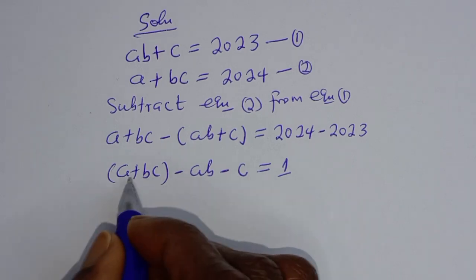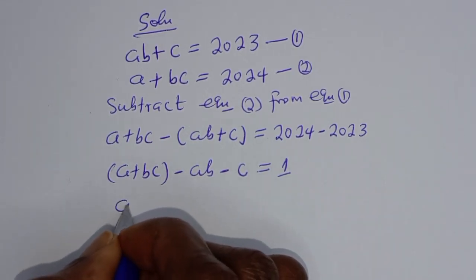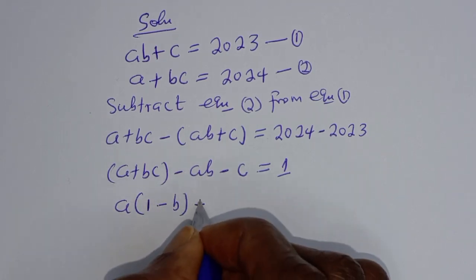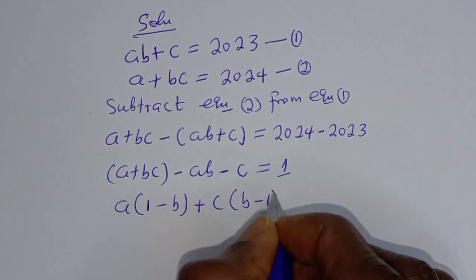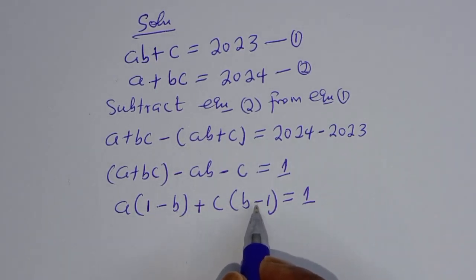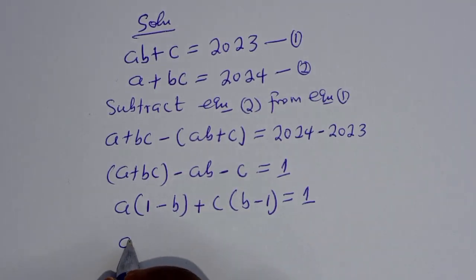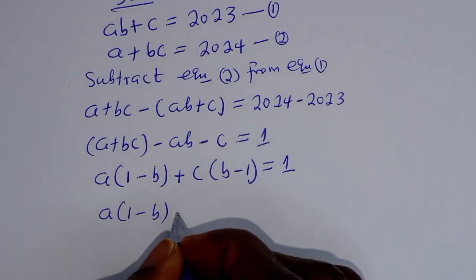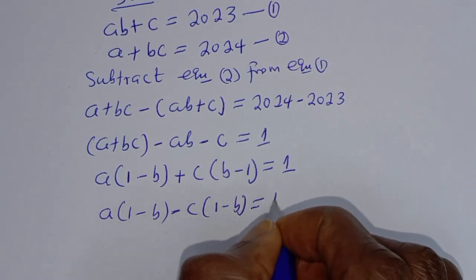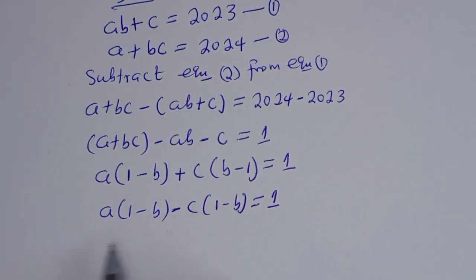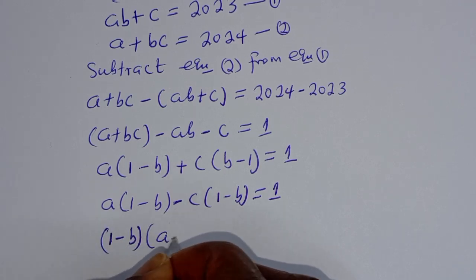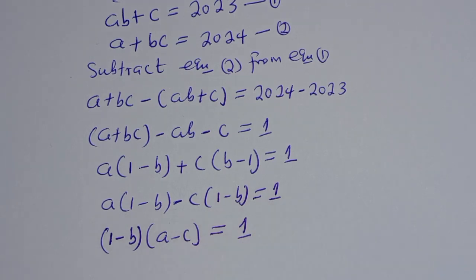From here we can factor. We have a(1 - b) + c(b - 1) = 1. Since (b - 1) = -(1 - b), we can rewrite this as a(1 - b) - c(1 - b) = 1. Then factoring out (1 - b), we get (1 - b)(a - c) = 1.